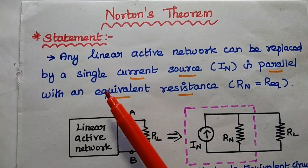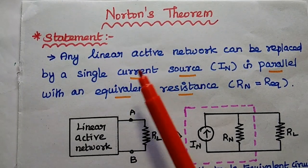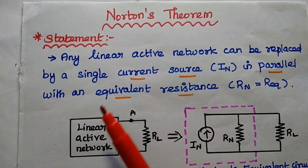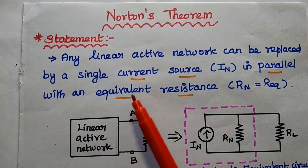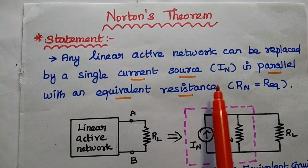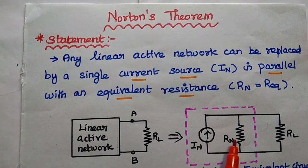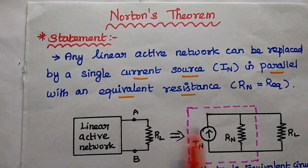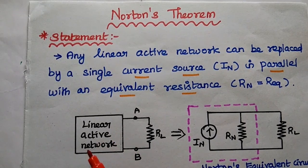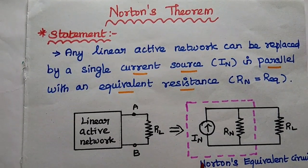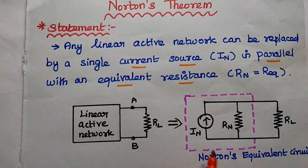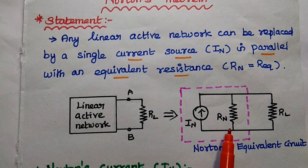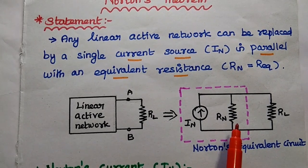The statement of Natan's theorem: any linear active network can be replaced by an equivalent circuit consisting of a single current source in parallel with an equivalent resistance. So any linear complex network can be replaced with Natan's equivalent circuit, which is nothing but the current source in parallel with the equivalent resistance.